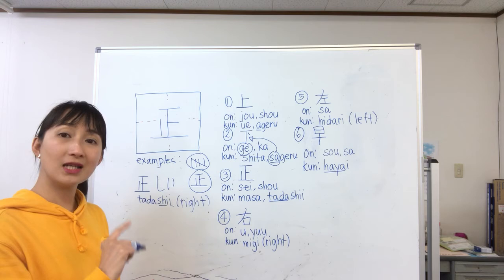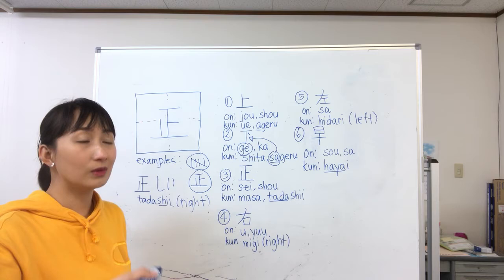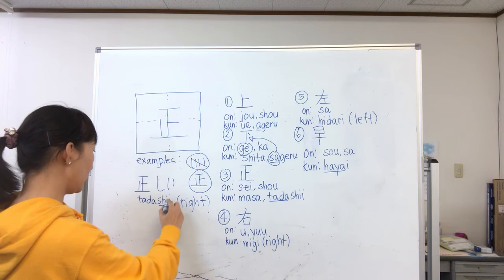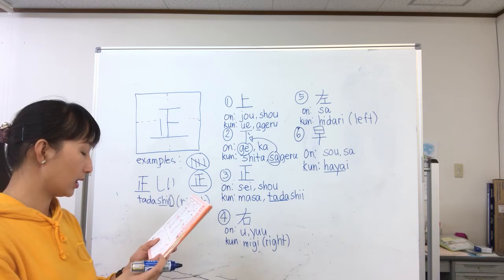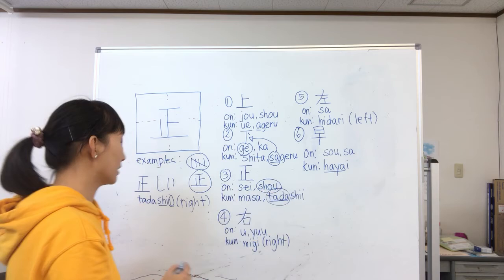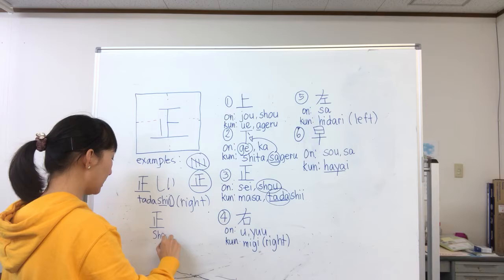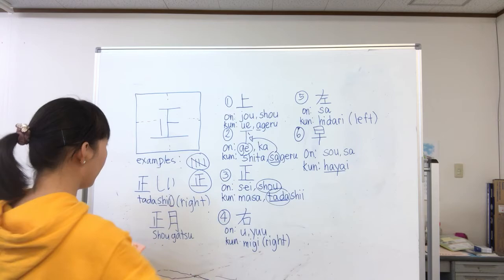If you pronounce it as just tadashi without the elongation, it becomes a name — actually my husband's name. So you must elongate: tadashii. Also, another reading for this kanji is shou. Shou plus gatsu becomes shogatsu, which means New Year.